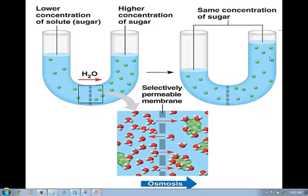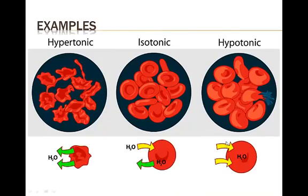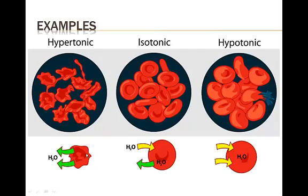Now let's look at the blood example from the book. In a hypertonic solution, the solution on the outside is filled with, for example, sodium. There's going to be more water per unit inside the red blood cells than on the outside. So to reach equilibrium, the blood cells push their water outside toward all the salt. By doing that, this begins to crenate — it gets smaller and wrinkles up.